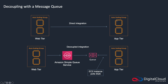Auto scaling helps because it will add instances, but there can still be a problem where data coming in is not getting processed quickly enough. With decoupling, shown at the bottom of the diagram, you put a queue in the middle. The web tier receives data to be processed, puts it on the queue, and then the app tier — when it's ready — pulls from the queue, finds the data, and processes it. That's decoupling your applications.